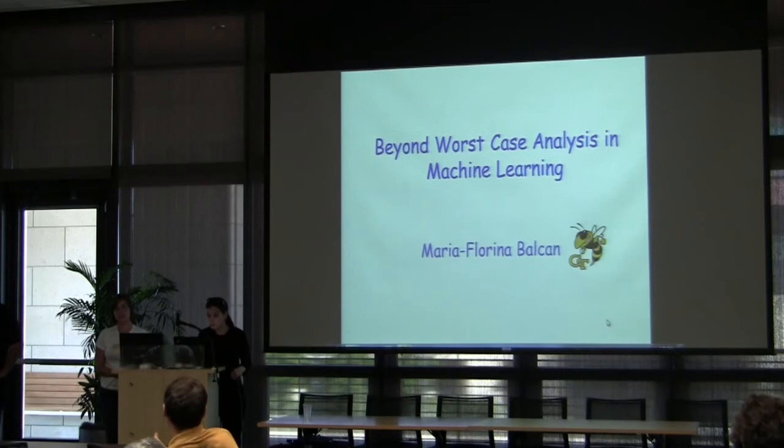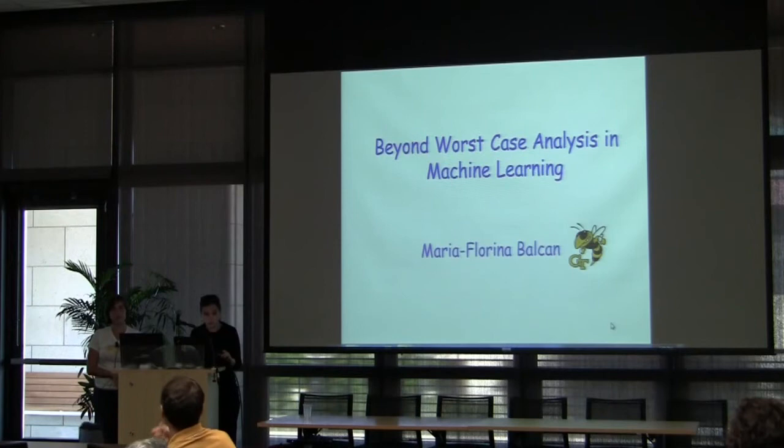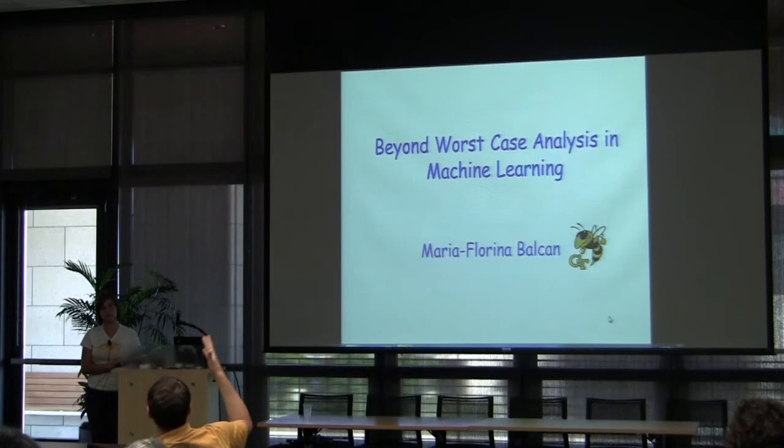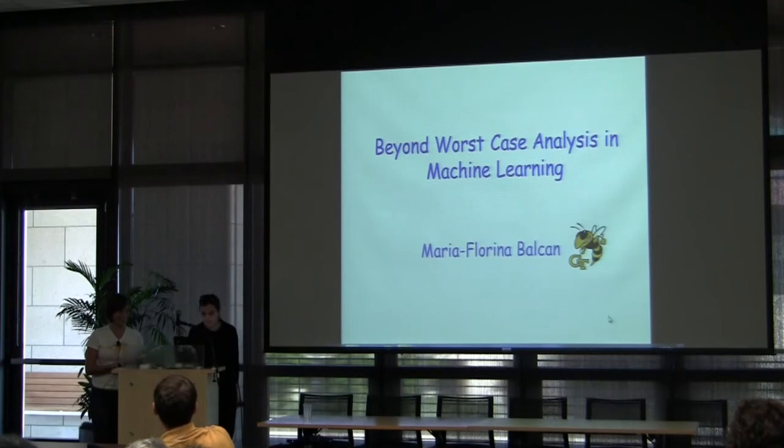Q: In principle, there could be two different signatures that both satisfy the properties — an algorithm achieving the target and NP-hardness of doing better — and you prescribe different algorithms according to which signature you choose. Is that right? A: In principle, yes.